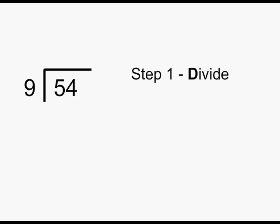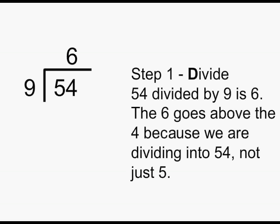When working any long division problem, you will always have several steps to follow. Step 1 is to divide. 54 divided by 9, or you can think how many groups of 9 are in 54. That would be 6. The 6 goes above the 4 because we are dividing into 54, not just 5.